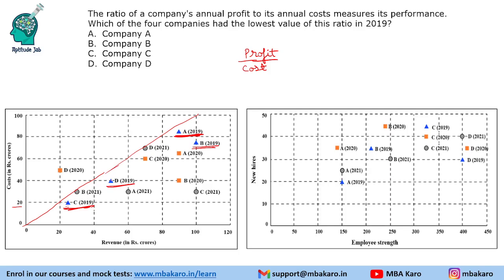B has a very high amount of profit. A has very low profit, but its cost is high. So for A, profit is low and cost is high, meaning the ratio profit-to-cost will be the lowest for A. You do not need to calculate the values — just observe the graph. The answer is company A.